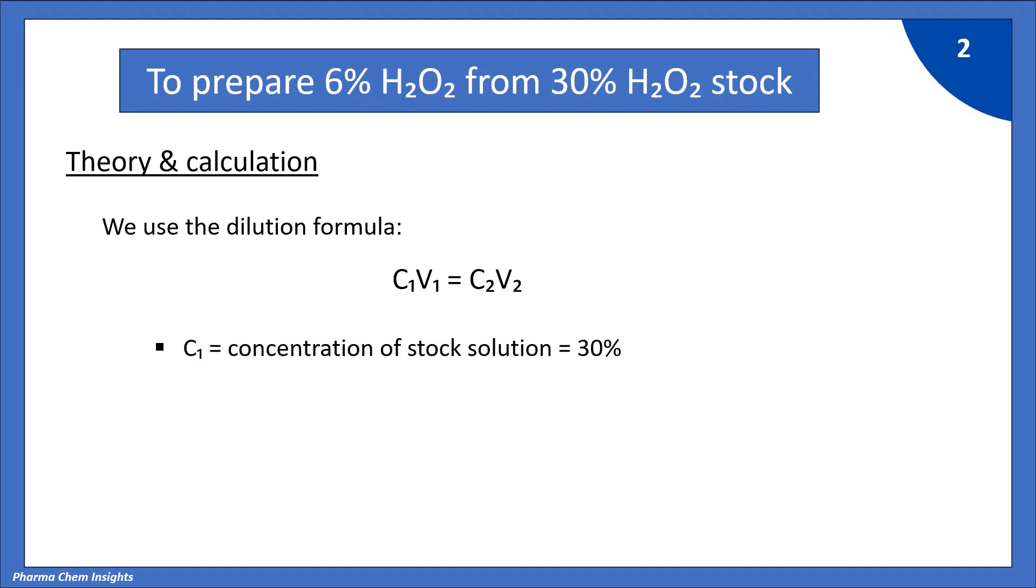C1 is the concentration of stock solution that is hydrogen peroxide 30%. C2 is the desired concentration we want that is 6%. V2 is the final volume we want, let's say 100 ml and V1 is the volume of stock needed to prepare 6% H2O2.